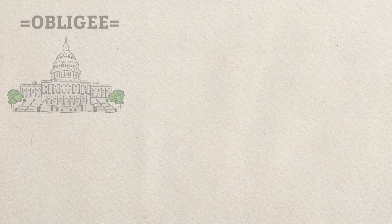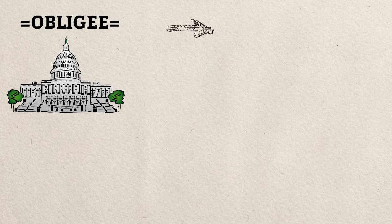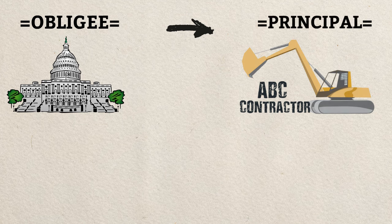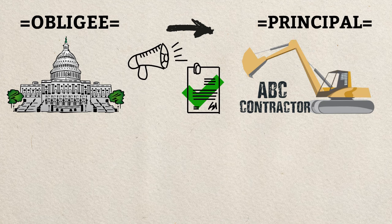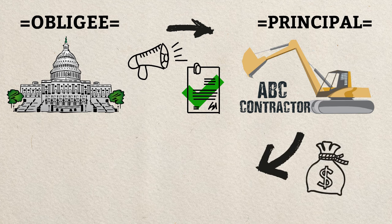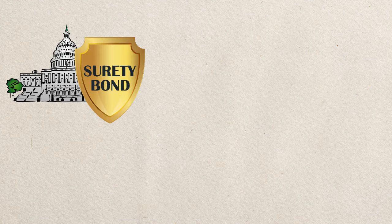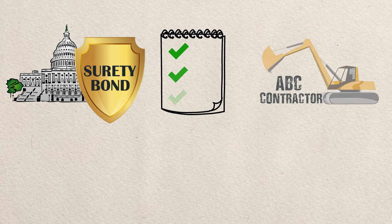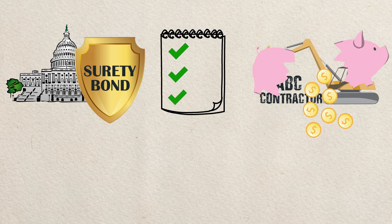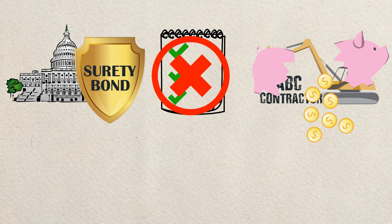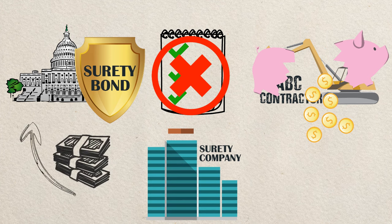Now let's go to how surety bonds work with all the parties involved. Here's an example from the construction industry. A local USA authority wants to construct an office building and hires ABC contractor for the job. ABC contractor is required by the local USA authority to secure a construction performance bond to guarantee they will fulfill the terms of the contract. ABC contractor will buy a construction performance bond from a reliable and trusted surety company. Basically, the surety bond protects local USA authority by guaranteeing the performance of ABC contractor. If ABC contractor goes bankrupt and can't fulfill their obligations, then the surety must step in to indemnify local USA authority.